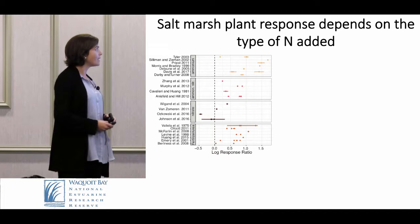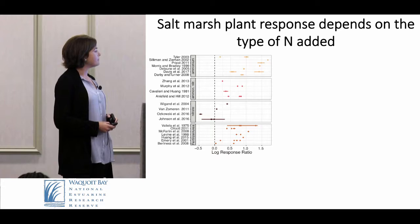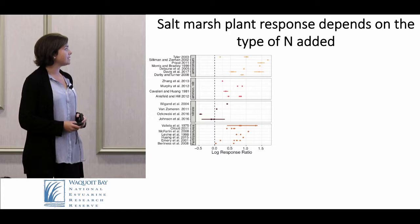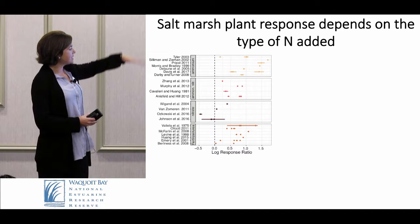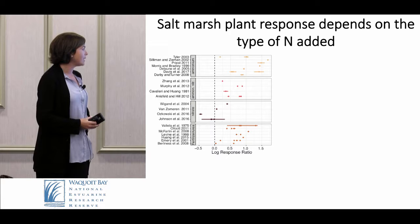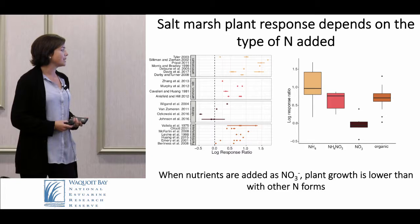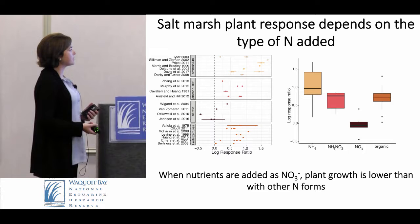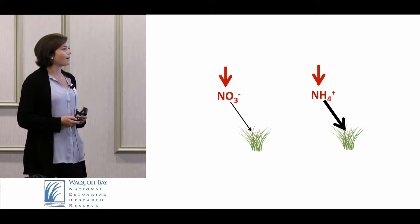We performed a meta-analysis on studies that looked at the effect of nitrogen enrichment on plant production, specifically in Spartina-dominated habitats. We calculated the log response ratio of the plants in response to different forms of nitrogen. In the graph, studies are organized by the type of nitrogen added: ammonium, ammonium nitrate, nitrate, and organic nitrogen. In general, we found that when nutrients are added as nitrate, plant growth is lower than with other forms.